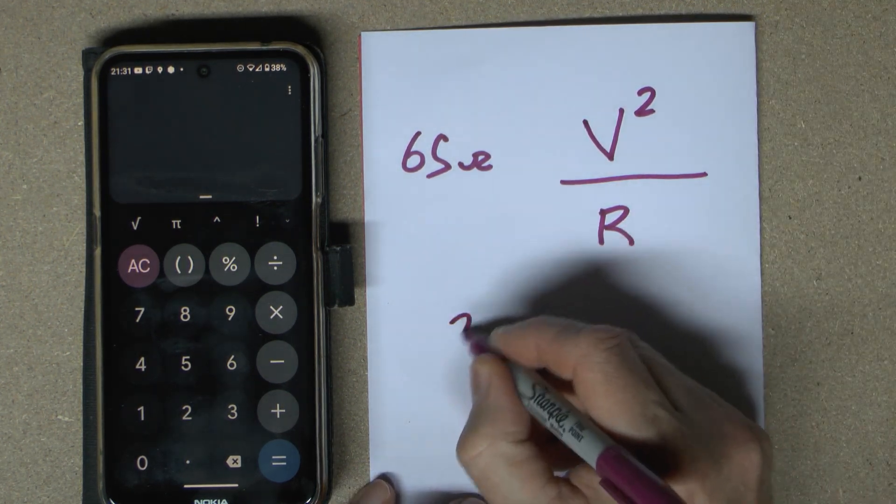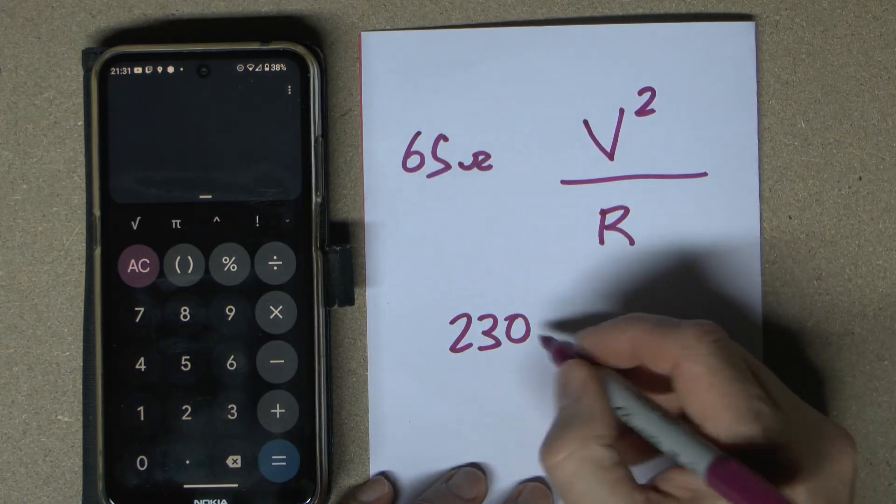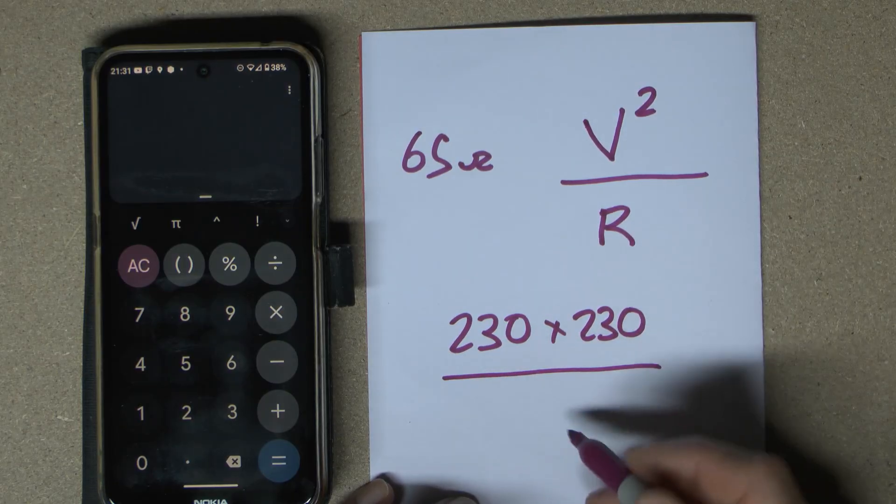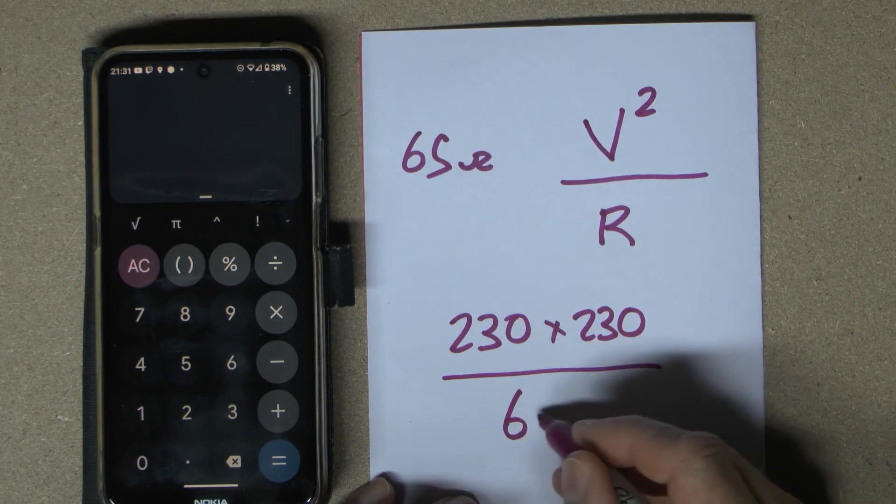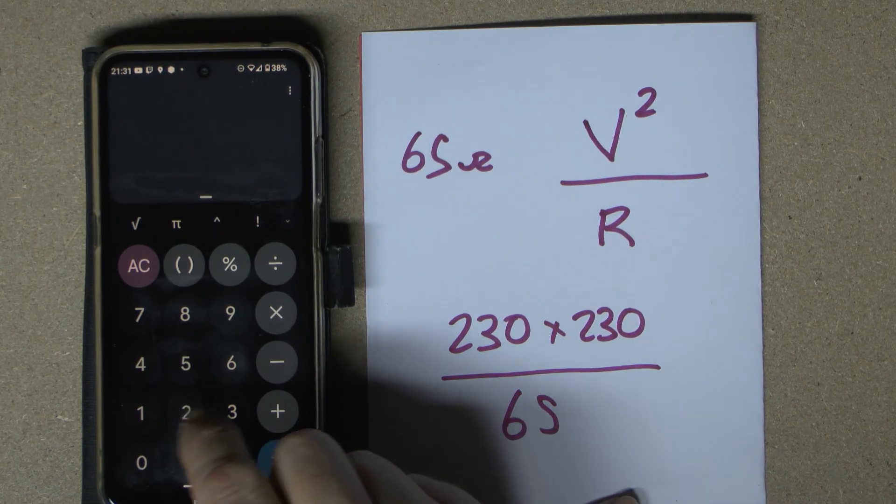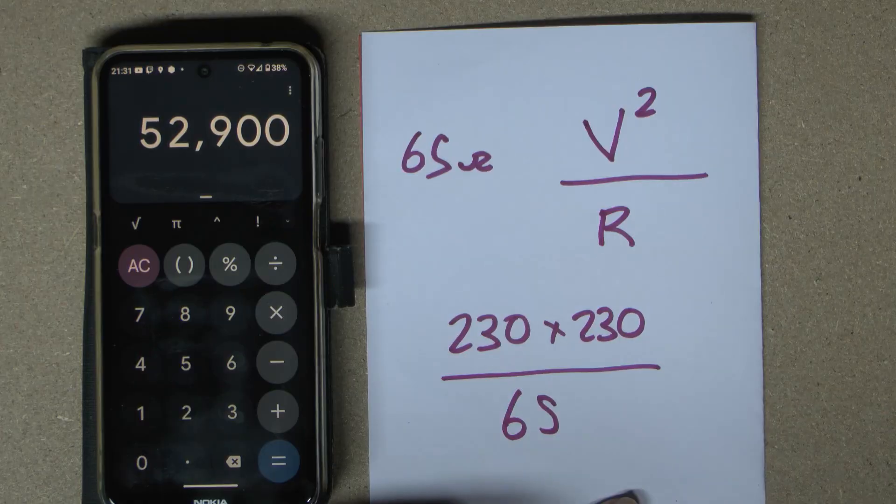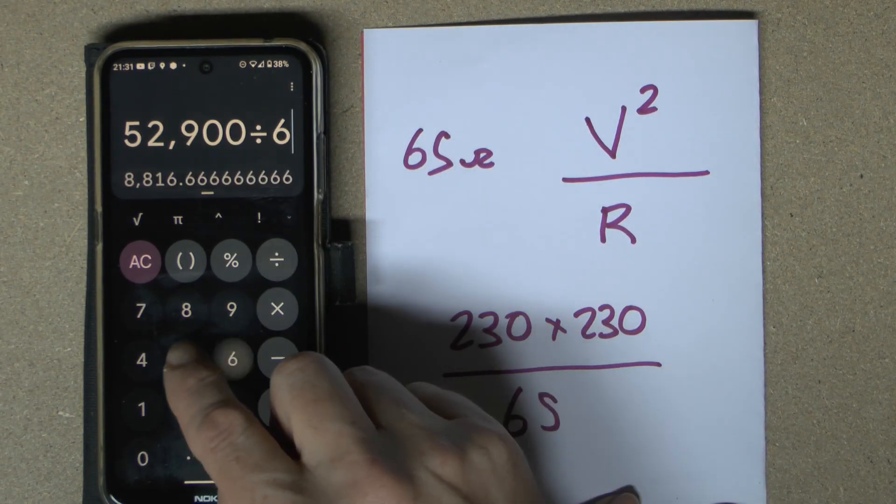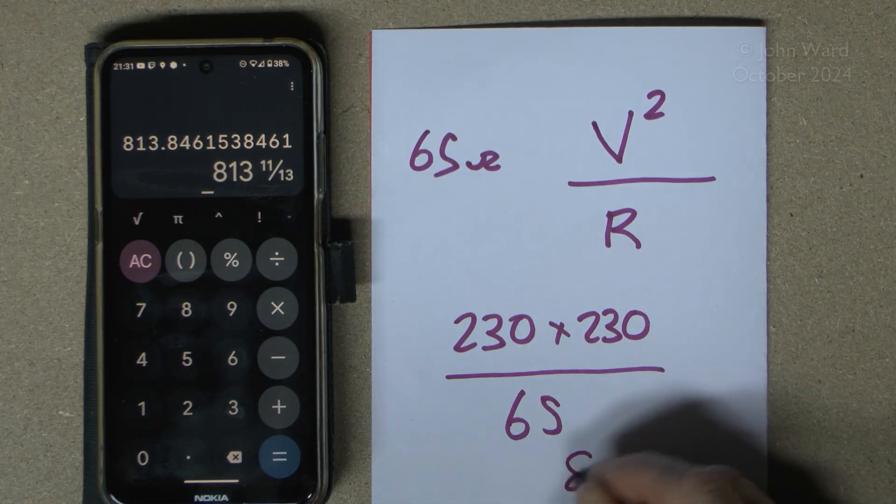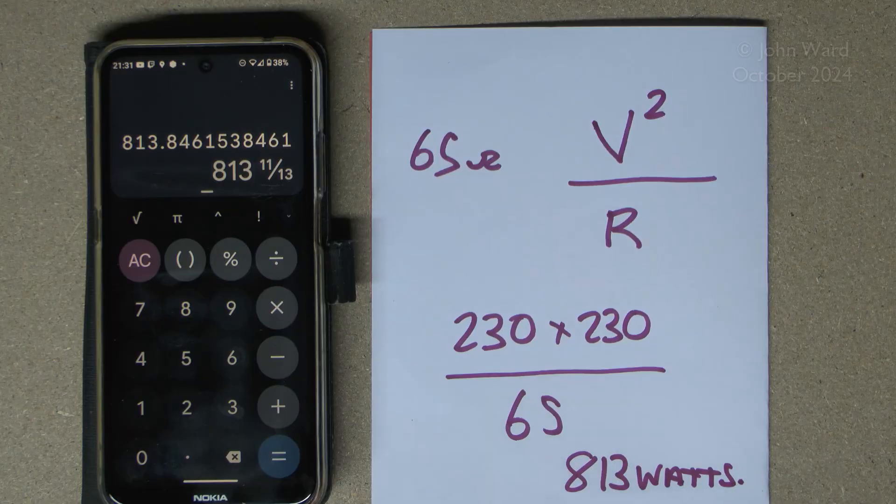In this case, the voltage is 230 volts. Voltage squared just means the same value multiplied by itself, so 230 multiplied by 230. Then we divide all of that by the resistance, which was 65 ohms. Using the calculator: 230 multiplied by 230, then divide by 65. That gives us a power of 813 watts for this one.